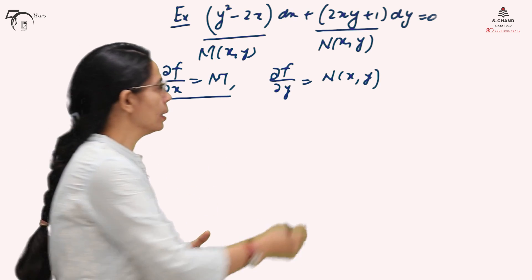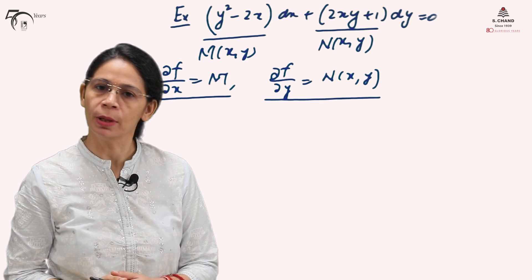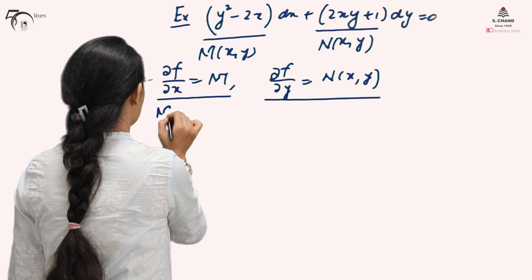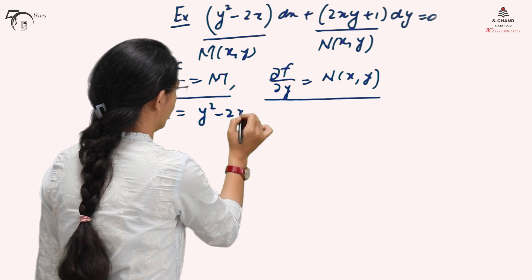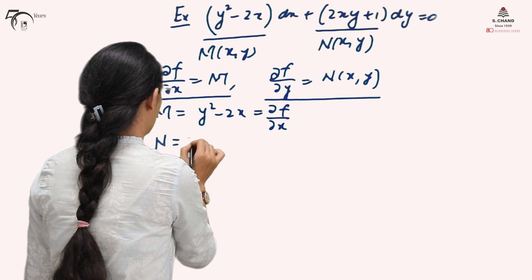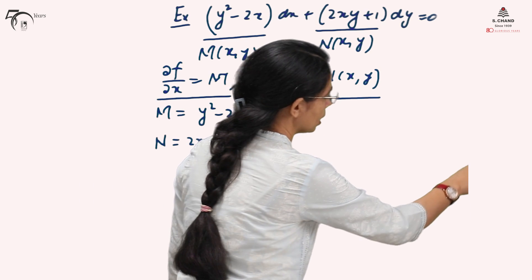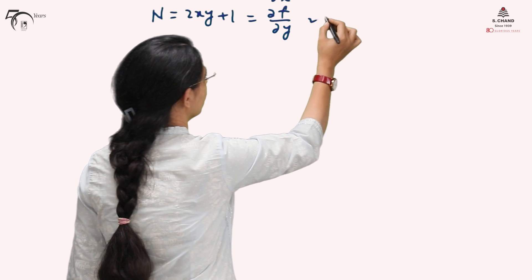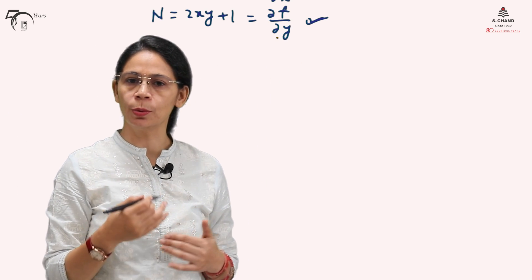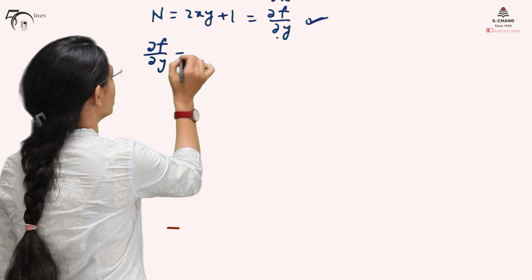We can also start with the expression for ∂f/∂y and find f(x,y) = c. This time we will take ∂f/∂y as our initial expression. So M = y² − 2x = ∂f/∂x, and N = 2xy + 1 = ∂f/∂y. We will start with ∂f/∂y = 2xy + 1 — let me call this equation (1) — to find the expression for f(x,y).